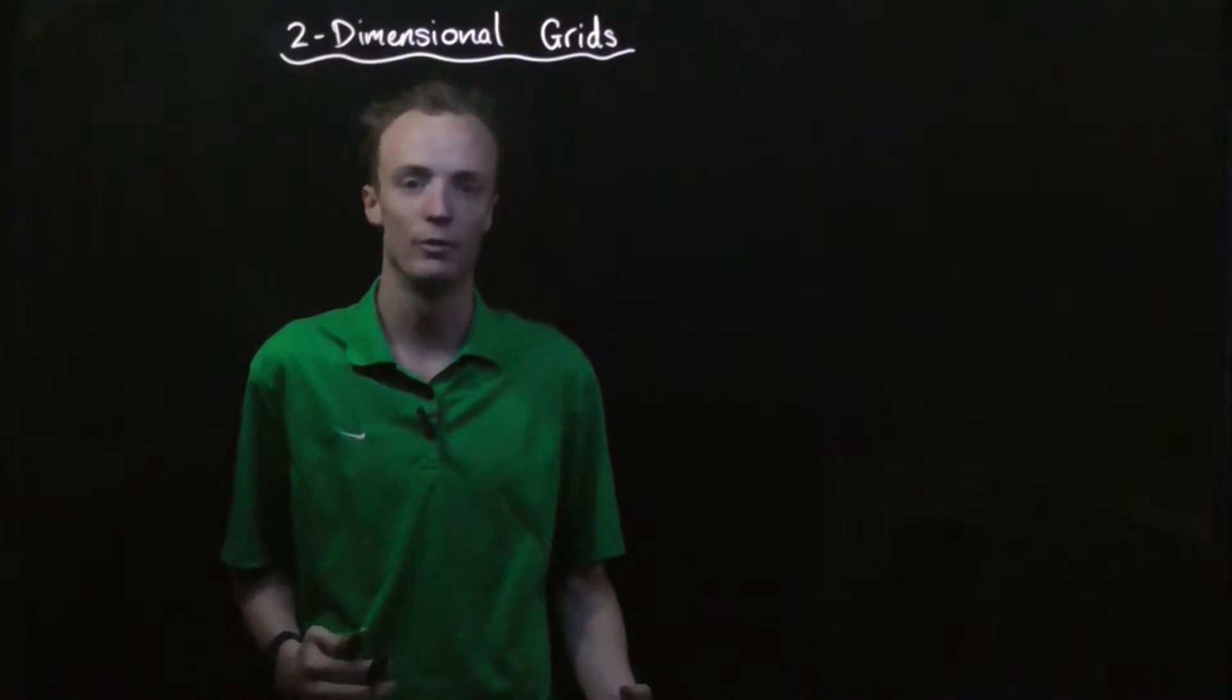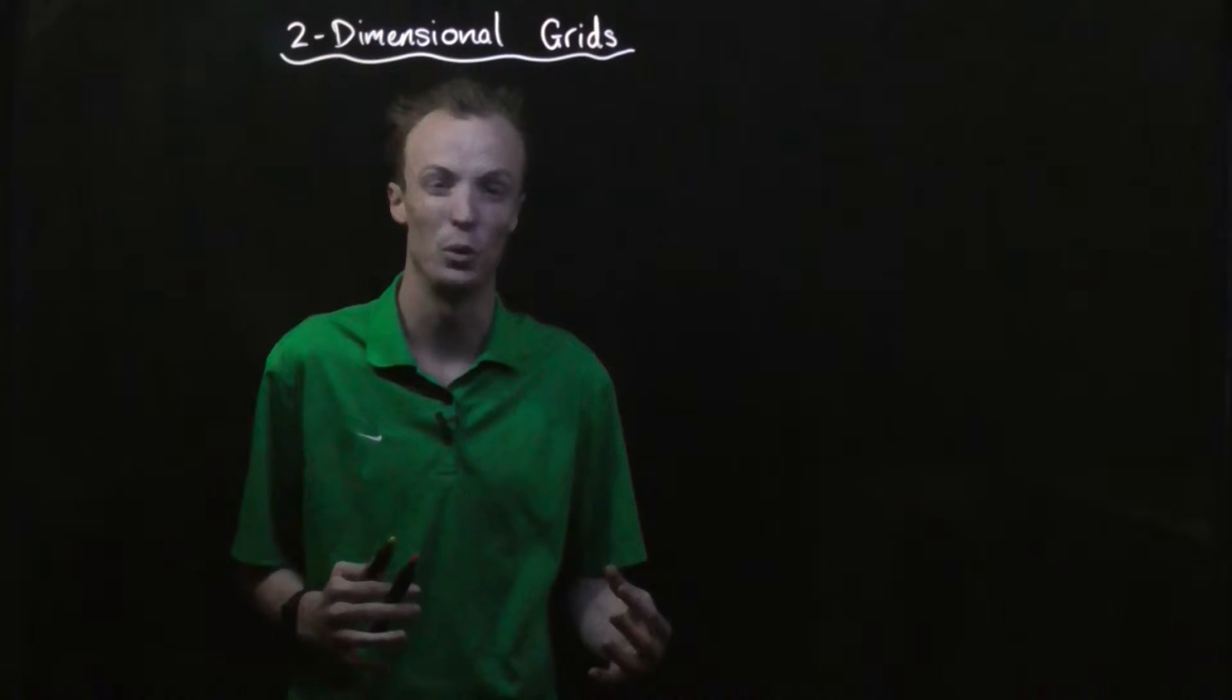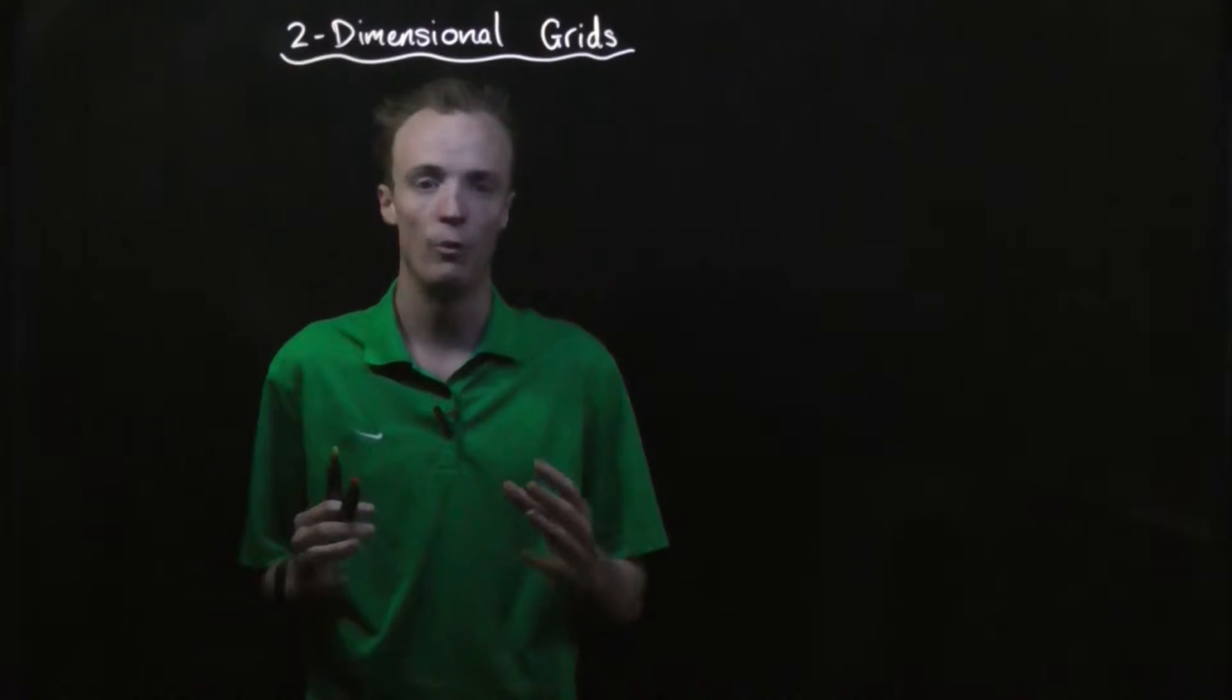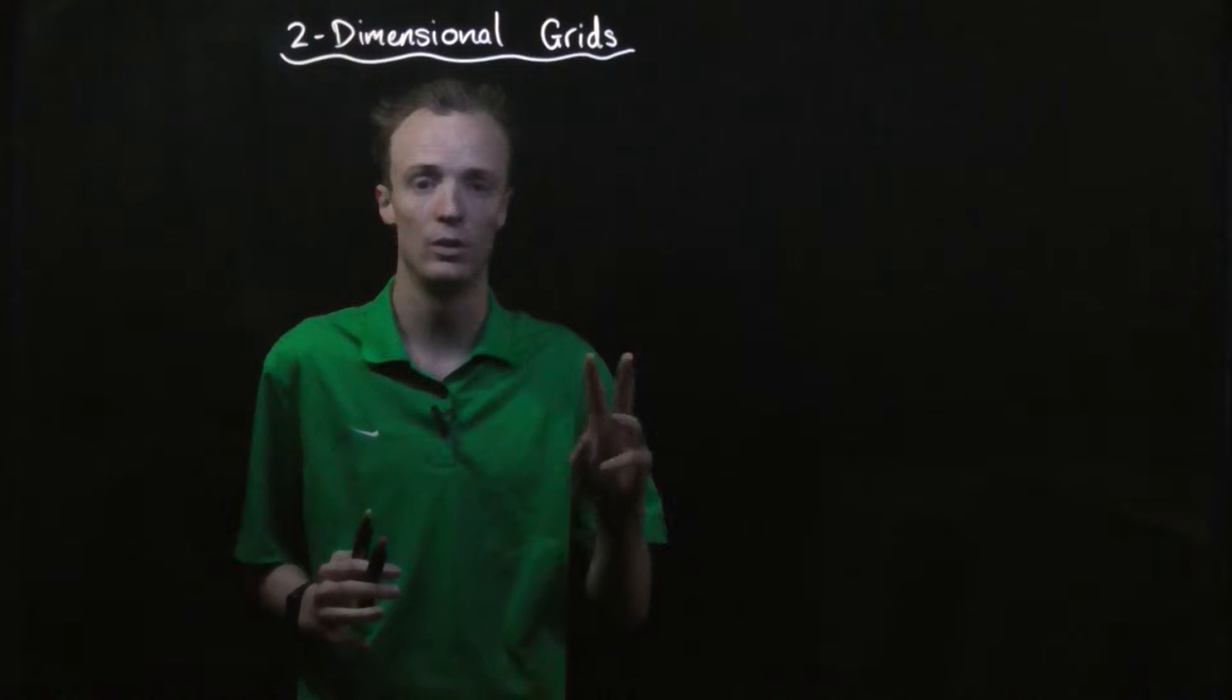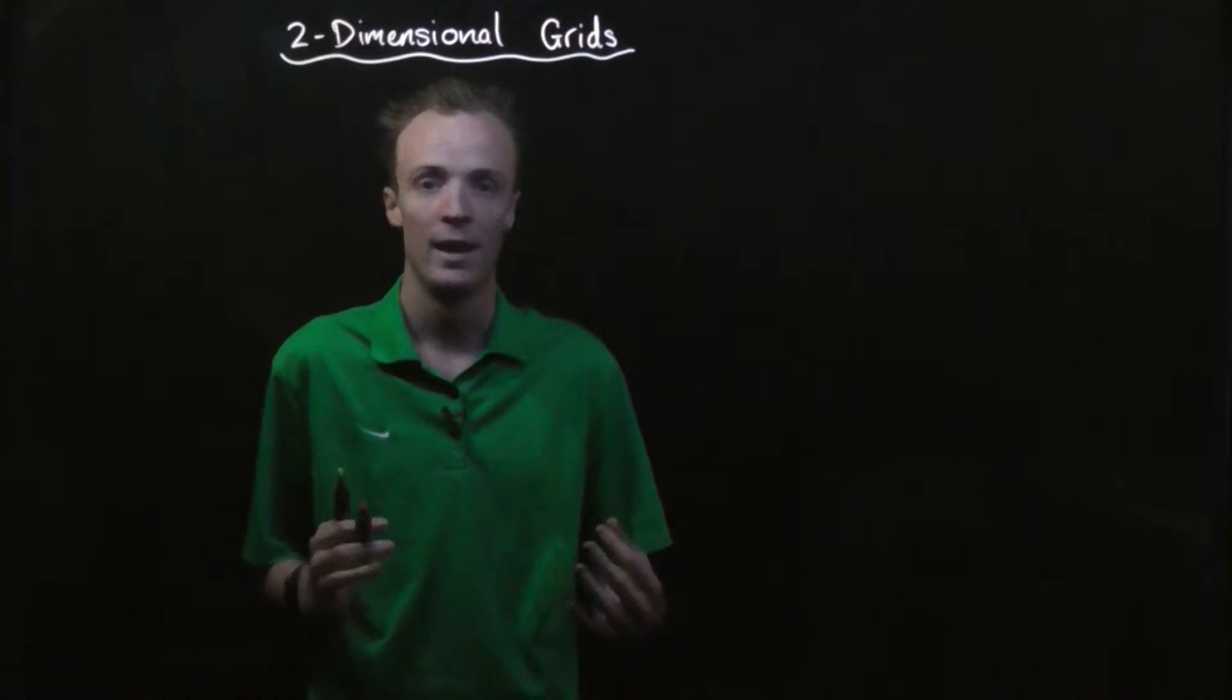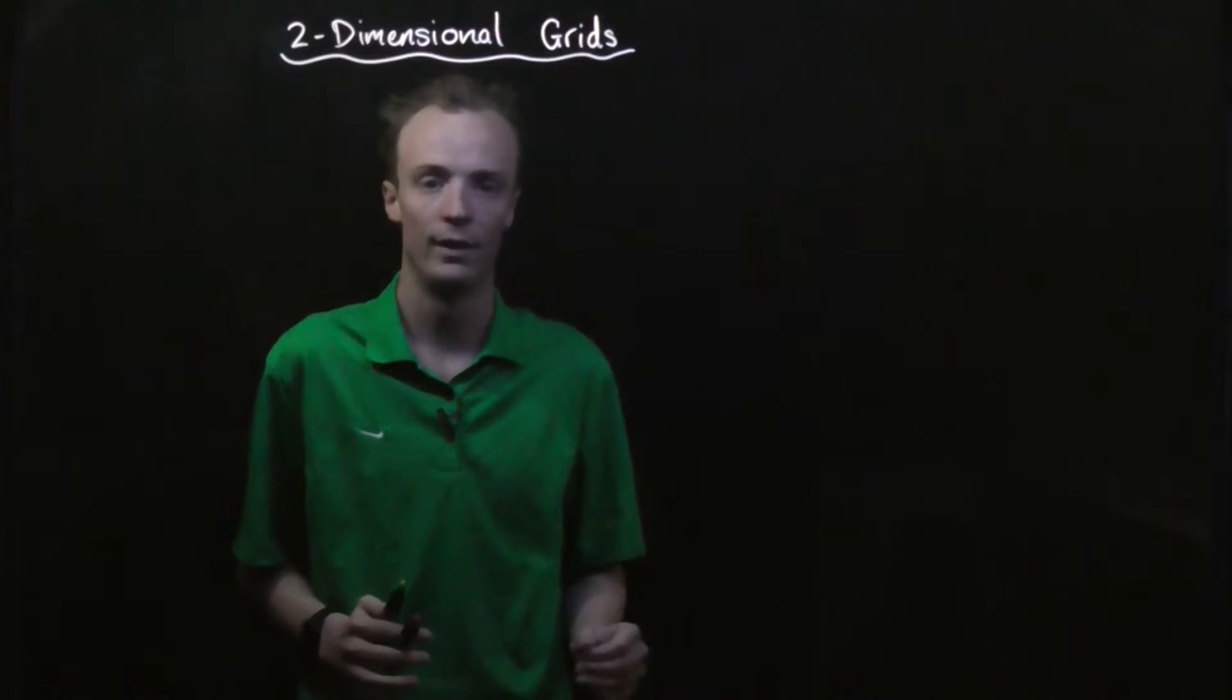Another way that we can use to represent the total outcomes, or the sample space, of problems that have two steps in probability is the use of two-dimensional grids.